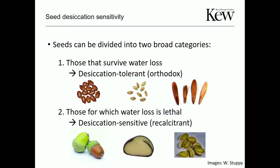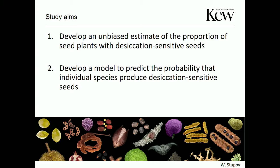These seeds are also sensitive to environmental change — increasing drought under climate change may be a problem. We had two aims: first, get an unbiased estimate of how many of the world's seed plants have this trait; and second, develop a model to predict the probability that an individual species has this desiccation-sensitive trait.